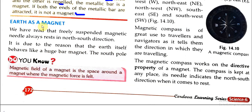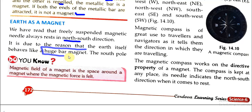Next, we have Earth as a magnet. We have read that a freely suspended magnetic needle always rests in the north-south direction. Why is this? Because the Earth itself behaves like a huge bar magnet.